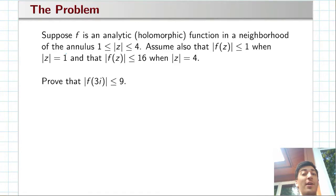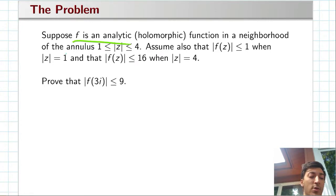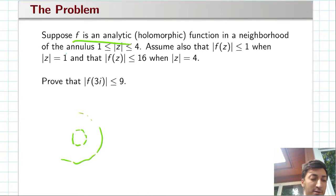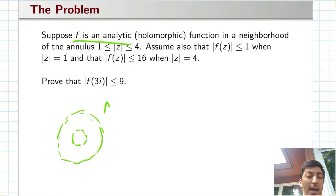Hi, and welcome back to a series I'm doing in complex analysis. Today we're going to be working with the following problem. Suppose that f is some analytic or holomorphic function in a neighborhood of some annulus — I'll go ahead and draw that for you. So we have an inner radius of 1, outer radius of 4, and it's analytic on the annulus itself.